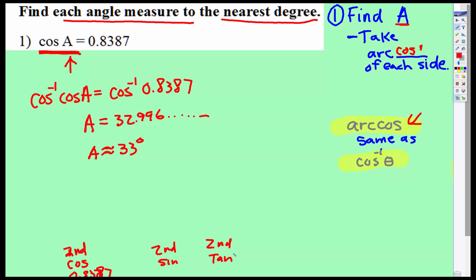That's it on finding the angle measure using arc cosine, taking the arc cosine of each side. Here's another way we could have written that.